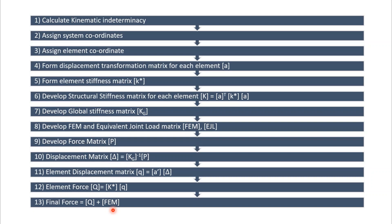The first step is to calculate the kinematic indeterminacy of the frame structure. Then we will assign system coordinates and element coordinates. After that, we divide the entire frame into small elements and find the displacement transformation matrix. From that, we calculate the element stiffness matrix and develop a structural stiffness matrix for each element. From those, we form a global stiffness matrix, then calculate fixed end moments, equivalent joint loads, and develop the force matrix.